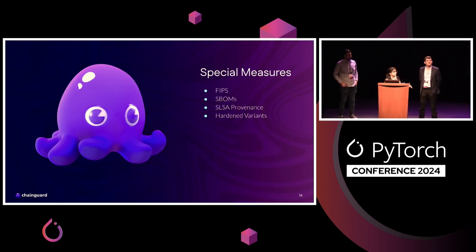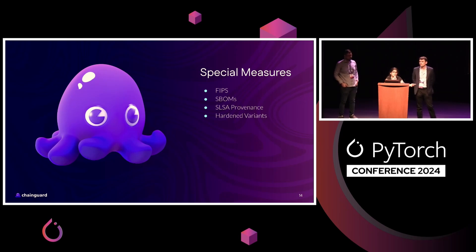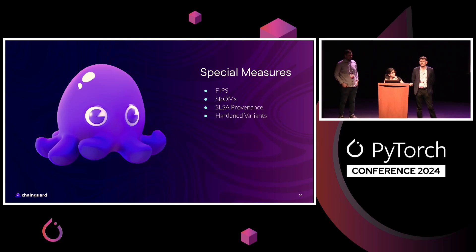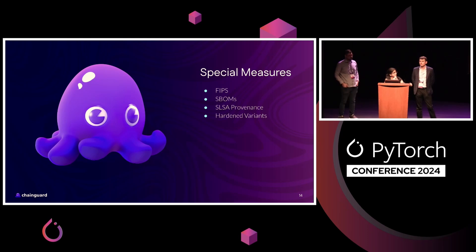In addition to zero CVE and minimal images, we also build FIPS-compliant images, so those of you with that requirement are covered. Even with a very minimal set of packages, it's always good to know what's running in your system. To that end, the PyTorch image we ship comes with an SBOM that tells you exactly that. The PyTorch image, like all other ChainGuard images, is compliant with SLSA standards, giving you a verifiable history of the build — including how the image was built, the dependencies that went into it, the source code, and the build system itself.